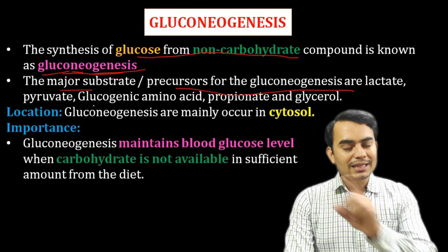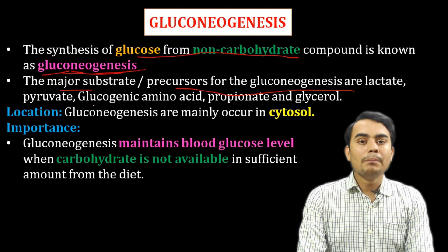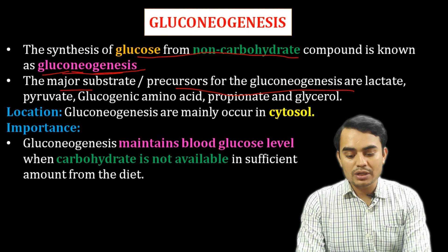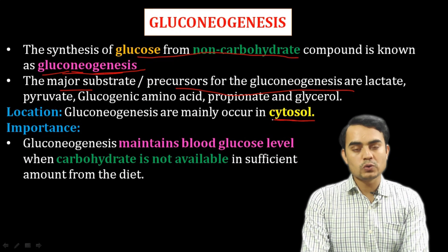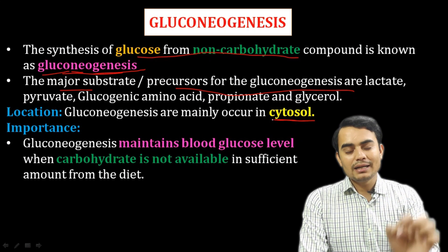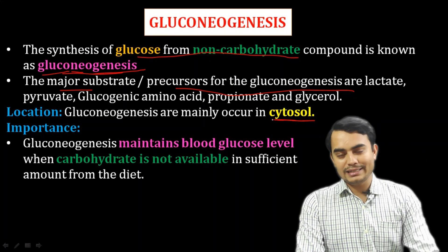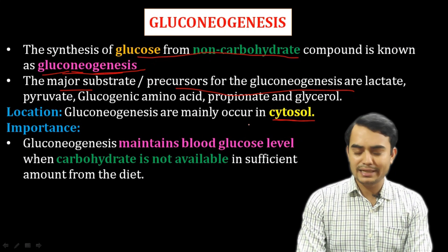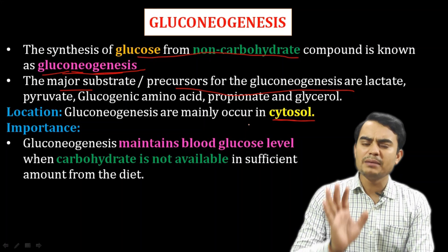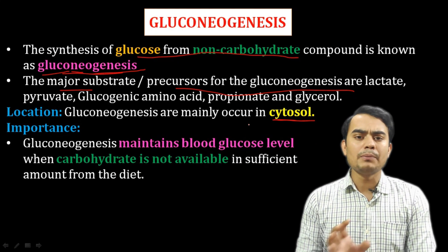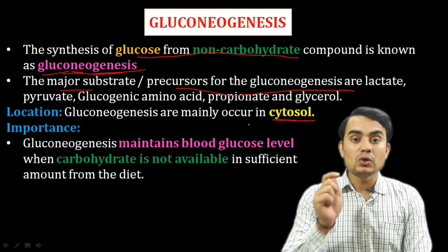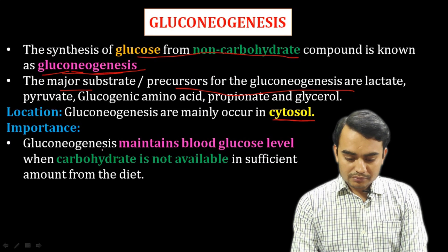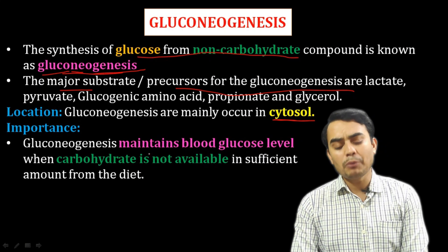These steps are mainly carried out in the cytosol, but a few reactions are carried out in the mitochondria. Majorly, the reactions of gluconeogenesis occur in the cytosol of all cells.